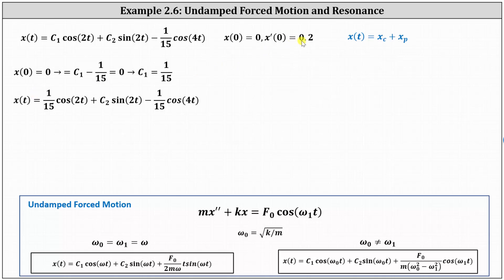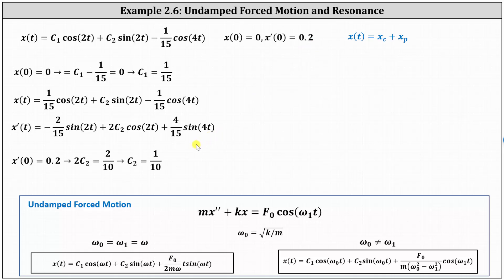Before using x'(0) = 0.2 to find C₂, we need x'(t), which requires the chain rule. Substituting t = 0 into x'(t): the first term drops out because sin(0) = 0, the third term also drops out because sin(0) = 0, and the middle term gives 2·C₂·cos(0) = 2C₂. Setting 2C₂ = 0.2 and multiplying both sides by 1/2 gives C₂ = 1/10. Substituting 1/10 for C₂ yields the final equation of motion: x(t) = (1/15)cos(2t) + (1/10)sin(2t) − (1/15)cos(4t).